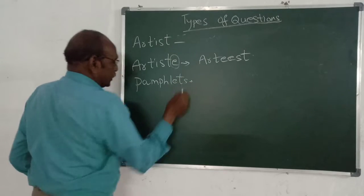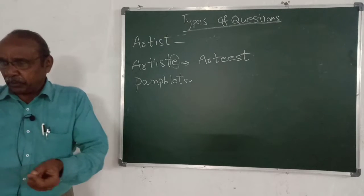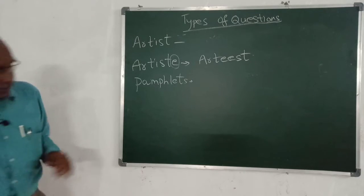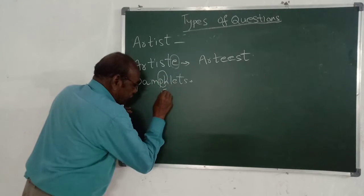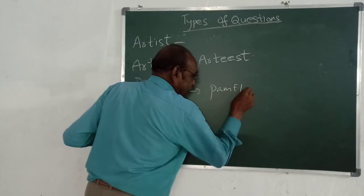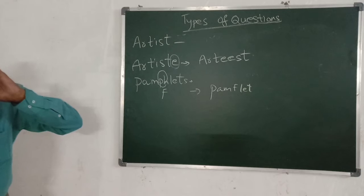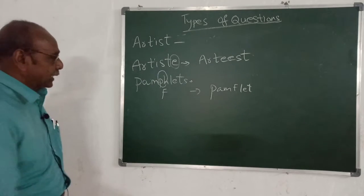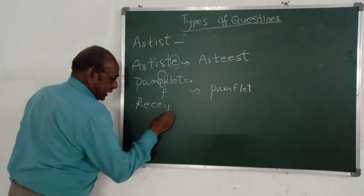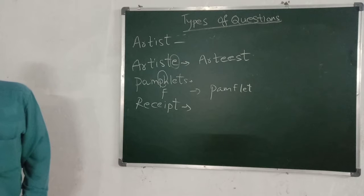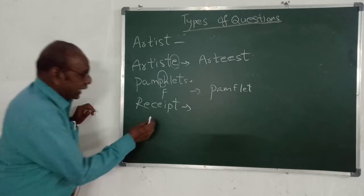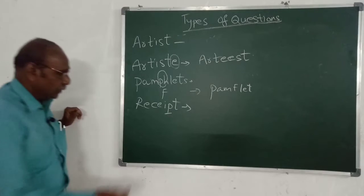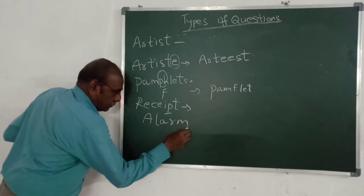A common mistake is the word 'pamphlet.' People say 'pamphlet,' but that is wrong. Since P-H is there, it gives an F sound — the correct pronunciation is 'pamphlet.' Another very common error: 'receipt.' Schools often say 'recept,' which is very wrong. The P has no sound — it is 'receipt.' Similarly, 'alarm' is not 'alarm' but 'alarm' — the R affects the pronunciation.